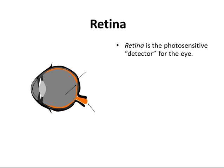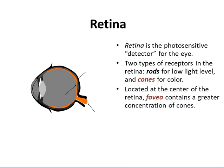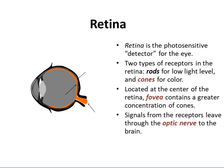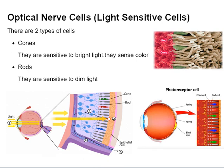The retina is a photosensitive detector for the eye. Two types of receptors in the retina include rods and cones — rods for low light levels and cones for color, located at the center of the retina. The fovea contains a greater concentration of cones which detect color. Signals from the receptors leave through the optic nerve to the brain.